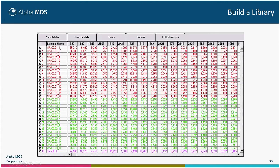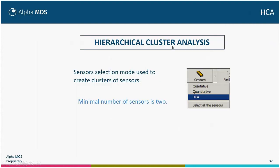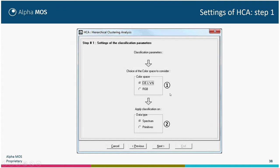Each object will appear in a single line and the proportion of each color will appear in each column. You can do hierarchical cluster analysis (HCA). Select HCA — the minimum number of sensors is two — and first select the dimension: LAB or RGB. LAB is closer to human perception; two colors that are close in human perception will be close in LAB, which is not always the case for RGB. Both can be interesting, but first LAB should be used.